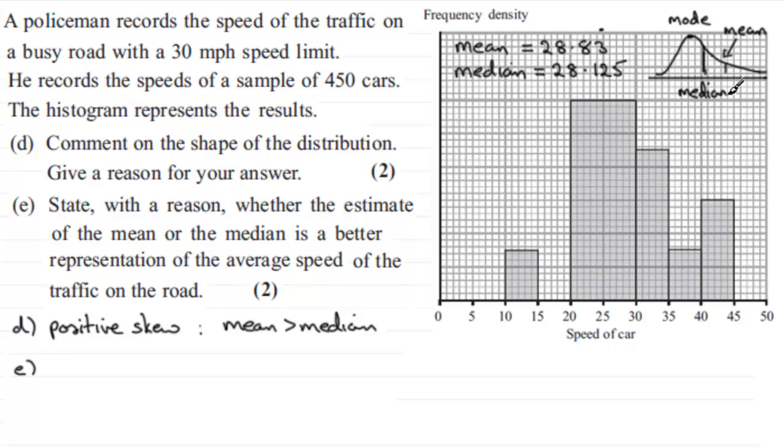If the distribution was symmetrical, then the mean would be just as good a statistic. But when you've got skewness, the median is a better statistic because it is not affected by any extreme values.